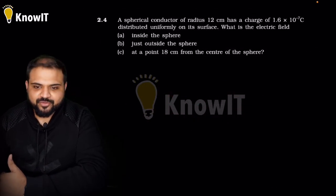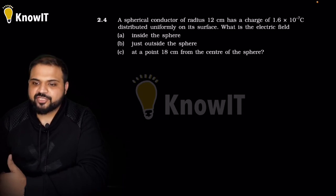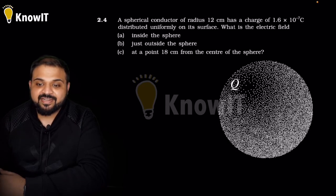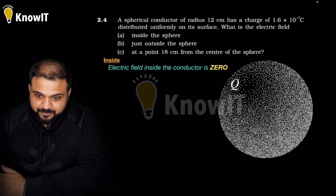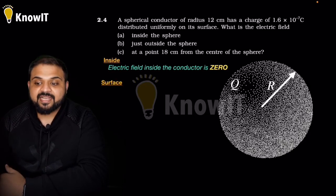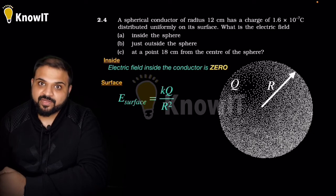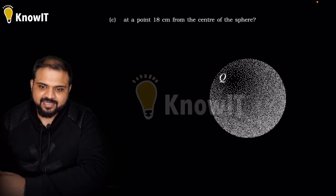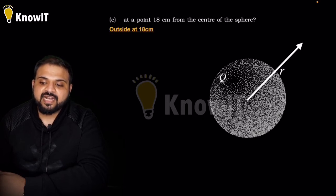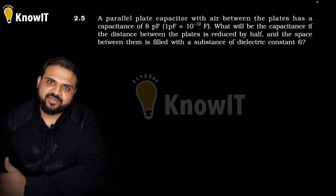Question 2.4: a spherical conductor of radius 12 cm has a charge of 1.6×10⁻⁷ coulomb distributed uniformly on its surface. The electric field inside the sphere is zero. Just outside the sphere, use E = kq/r², where r is the radius; putting values gives 10⁵ N/C. At a point 18 cm from the center, putting r = 0.18 m gives E = 4.4×10⁴ N/C.